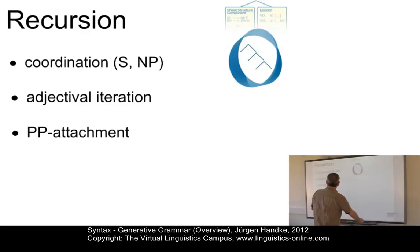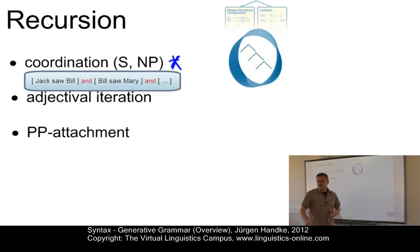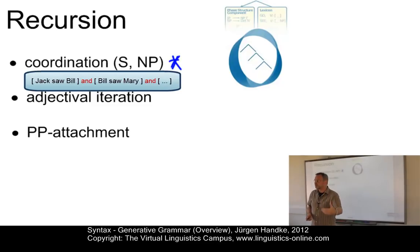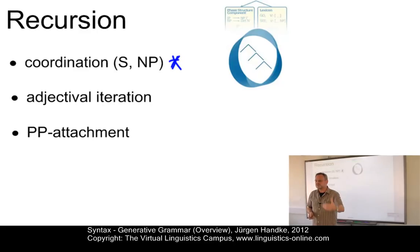The first example of recursion is called sentence or noun phrase coordination. We have examples such as 'Jack saw Bill and Bill saw Mary and Mary saw Jane' and so on. There is no end to this sentence — we simply apply the same rule time and again.